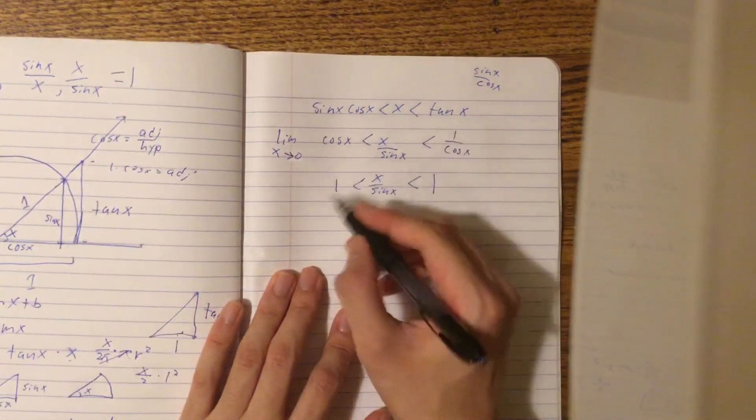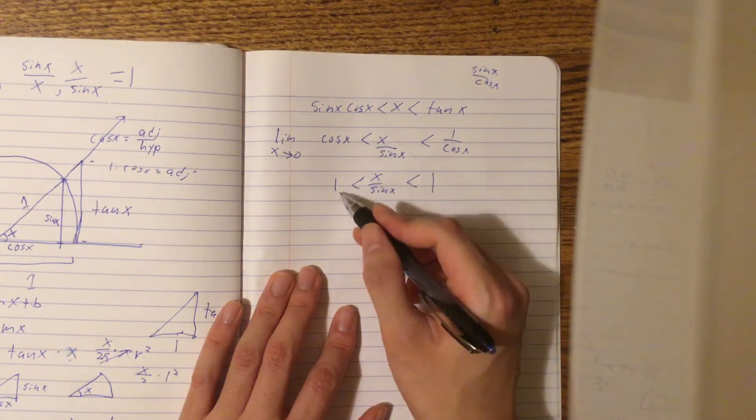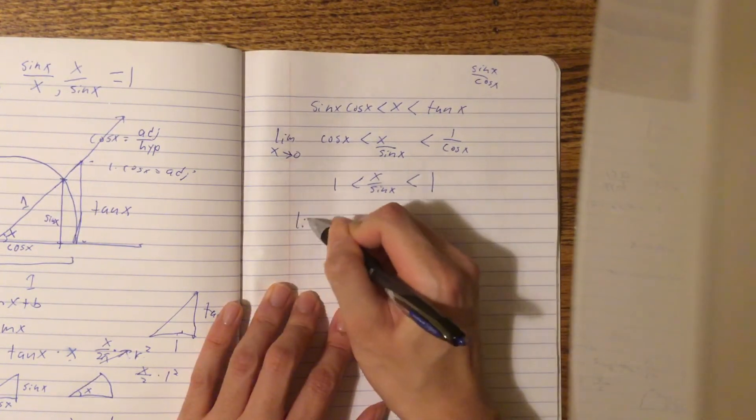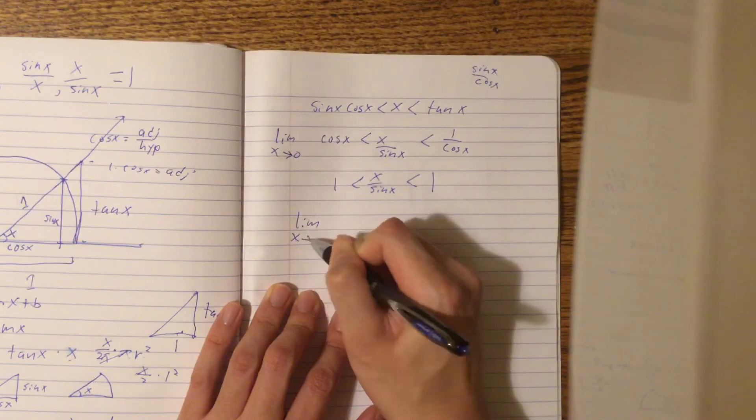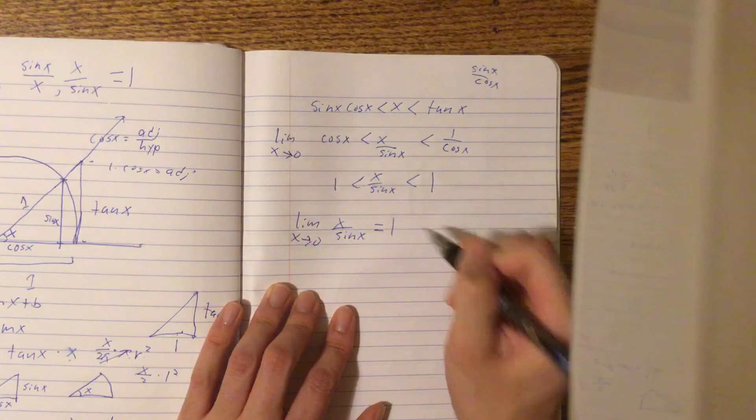So, we know the limit as x approaches 0 of x over sin x has to be in between 1 and 1. So, we know this to be true.